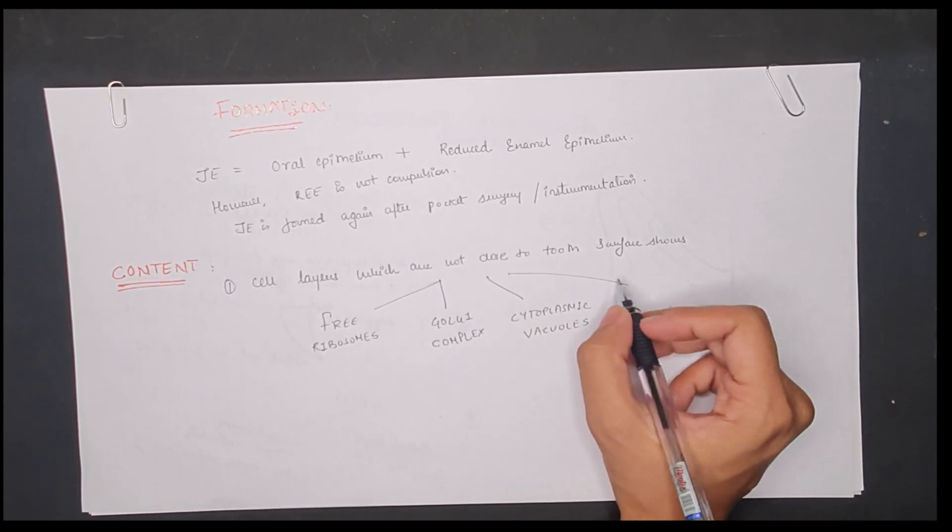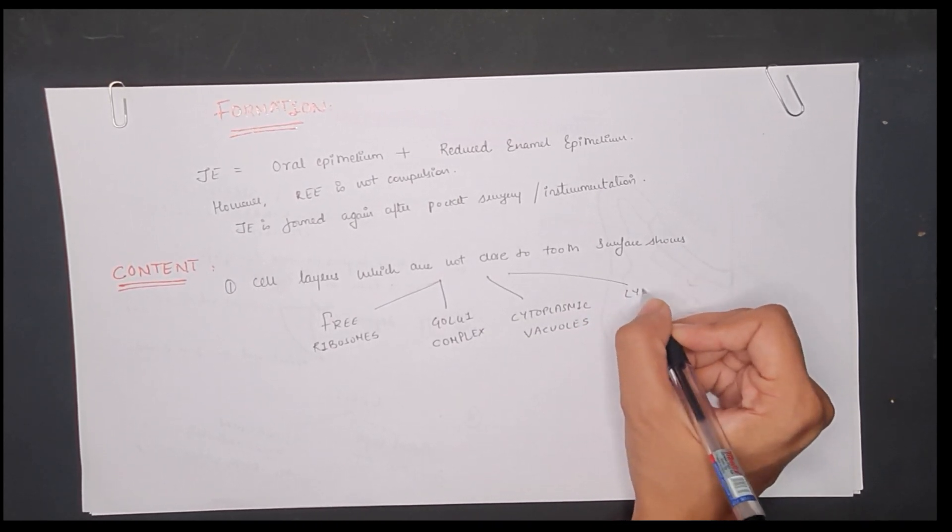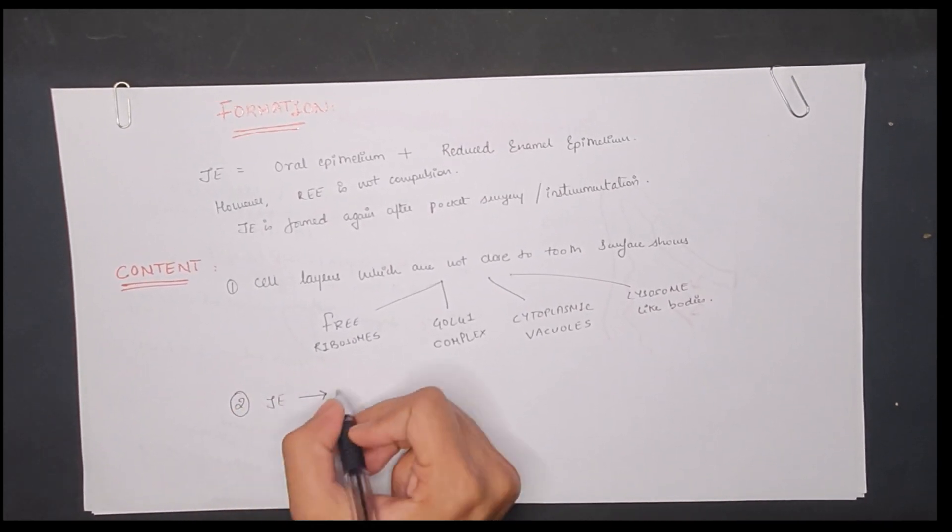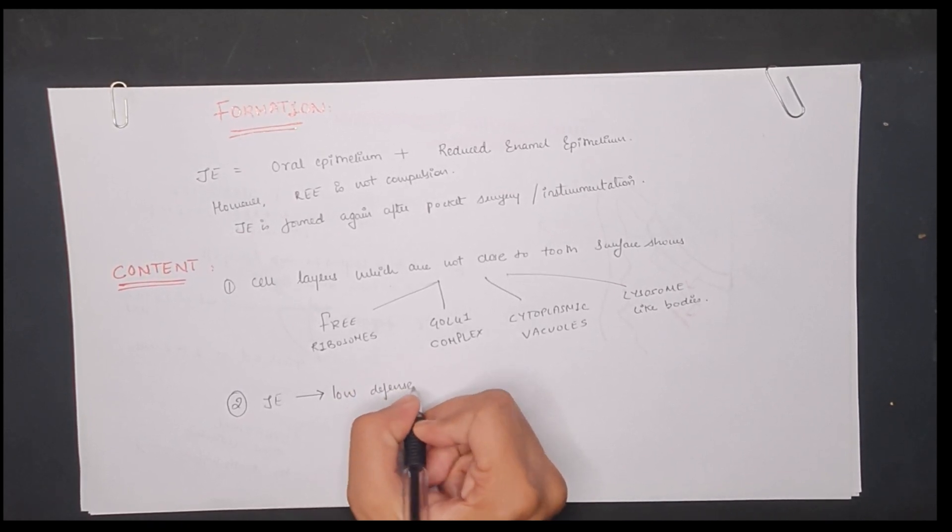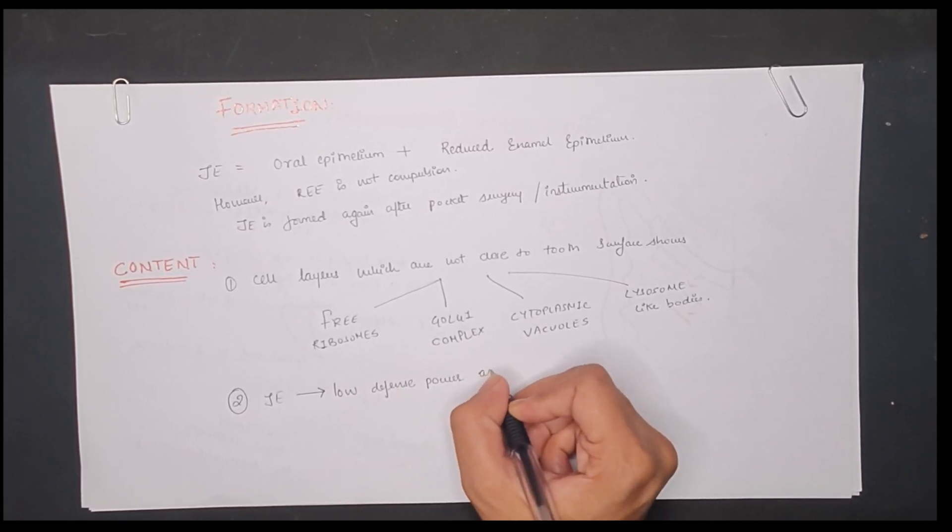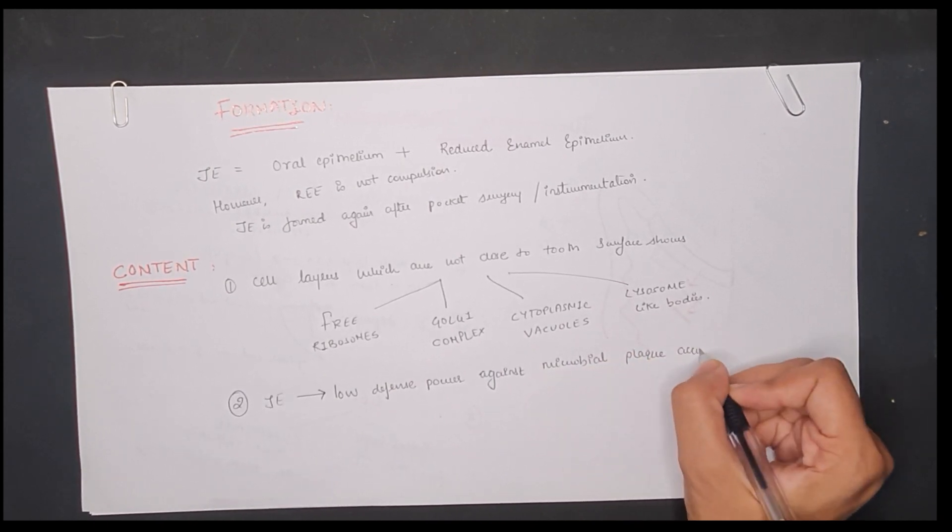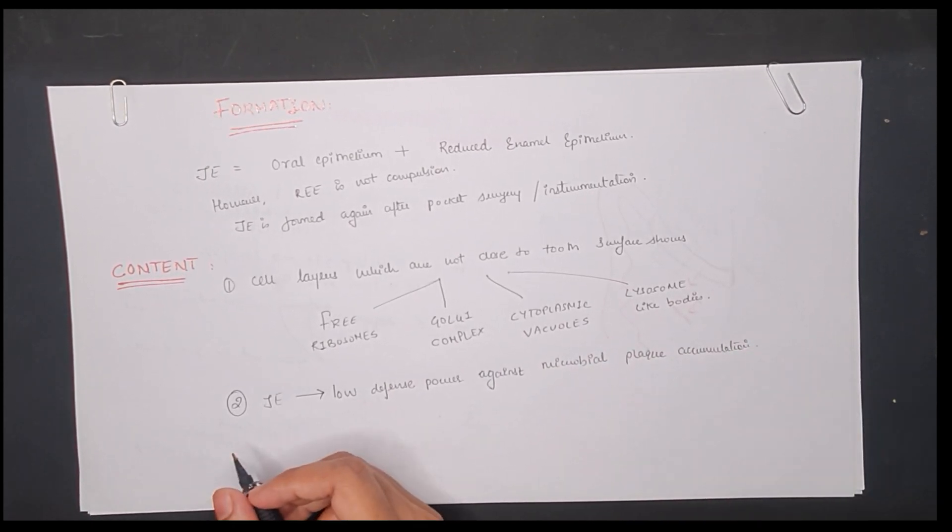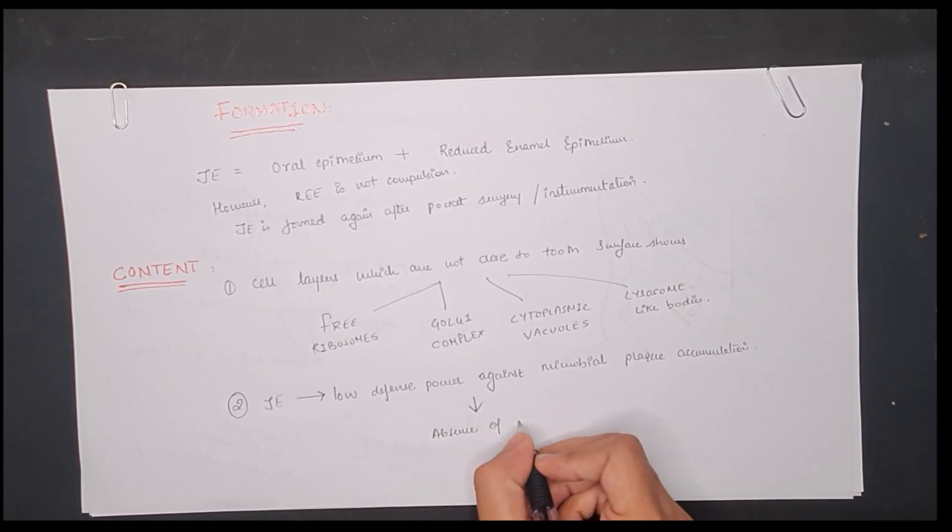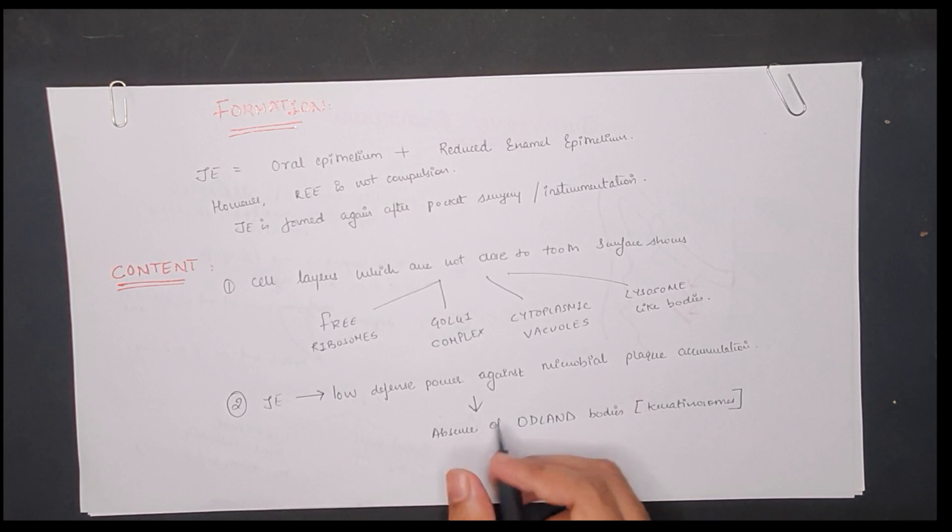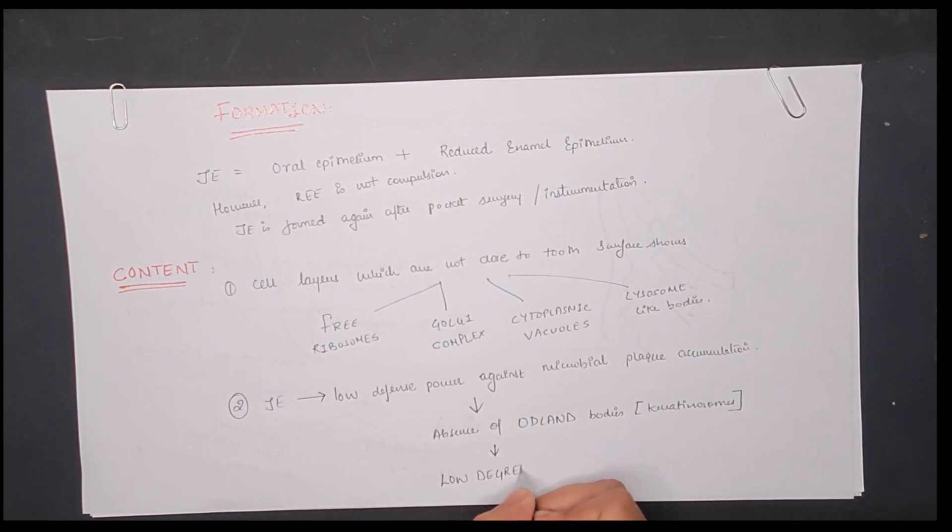Lysosome-like bodies are seen in these cell layers not apposed to the tooth structure. Second, lysosome-like bodies are present, but the absence of keratohyalin granules and histochemically demonstrable acid phosphatase, which are correlated with a low degree of degradation, may reflect a low defense power against microbial plaque accumulation in the gingival crevice.